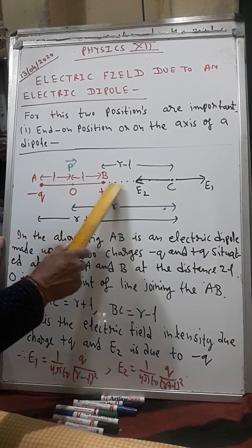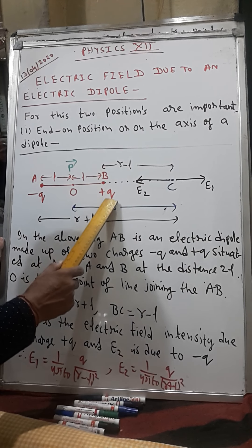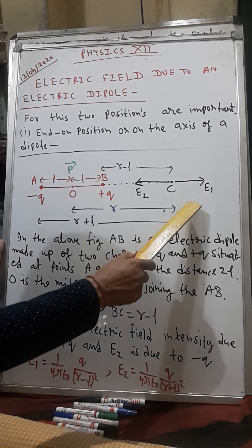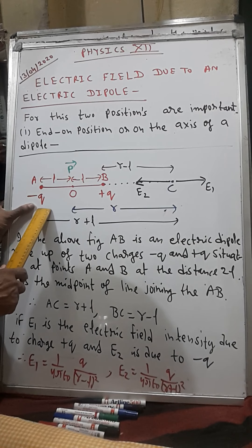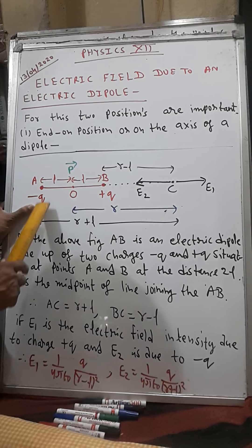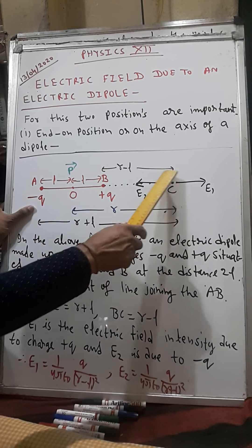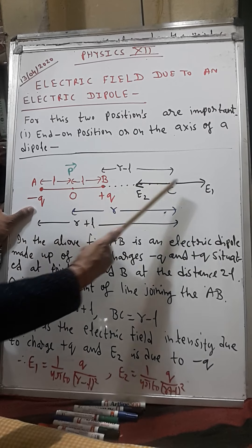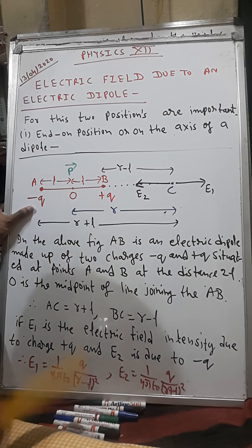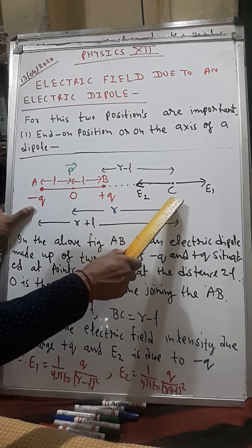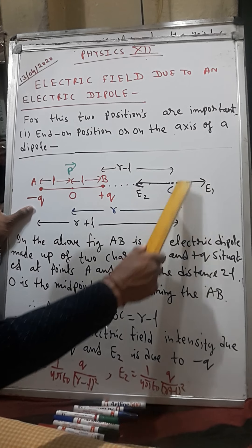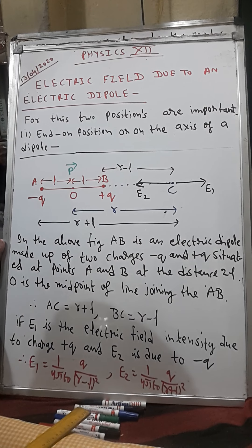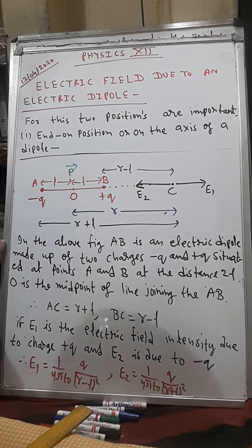So the electric field intensity due to plus q charge at point C will be in the direction of E1, in the outward direction. And due to minus q, it is attractive in nature. If the test charge is plus q naught, it will attract it. So this electric field intensity will be E2, directed inside. Since this point is very close and because of this E1 exists, E1 will be greater than E2.